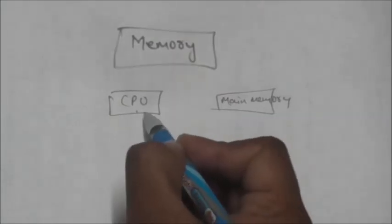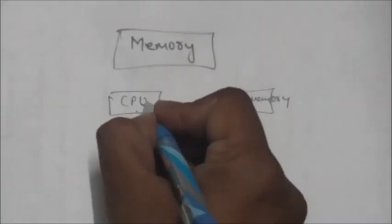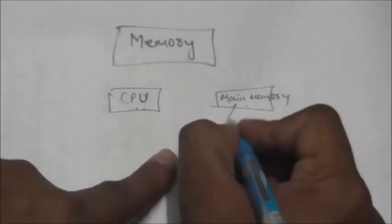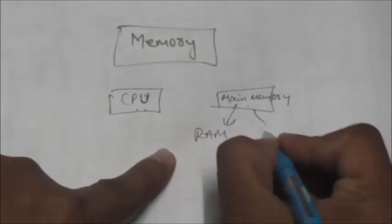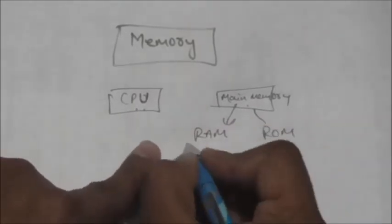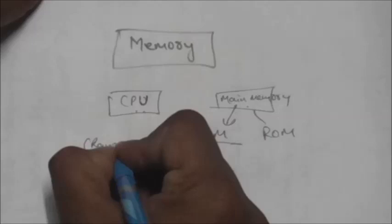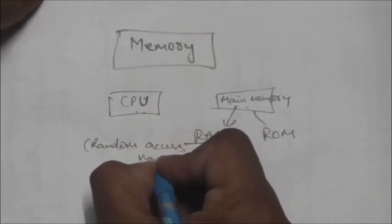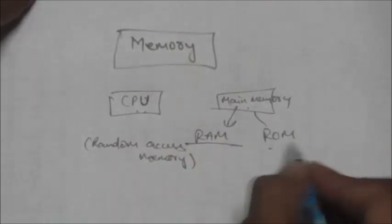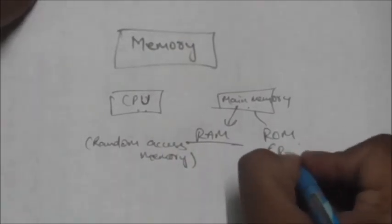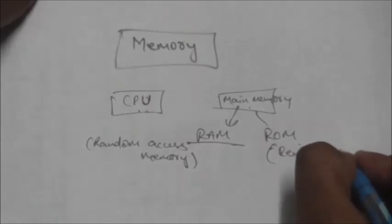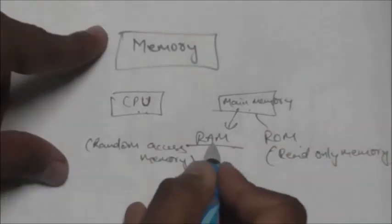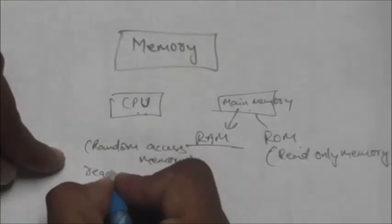Now this main memory consists of RAM and ROM. RAM means random access memory, and ROM is read-only memory. This random access memory, RAM, is also called read-write memory.